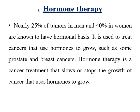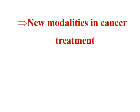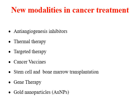Hormone therapy: nearly 25 percent of tumors in men and 40 percent in women are known to have a hormonal basis. It is used to treat cancers that use hormones to grow, such as some prostate and breast cancers. Hormone therapy is a cancer treatment that slows or stops the growth of cancer that uses hormones to grow. New modalities in cancer treatment include anti-angiogenesis inhibitors, thermal therapy, targeted therapy, cancer vaccines, stem cell and bone marrow transplantation, gene therapy, and gold nanoparticles.